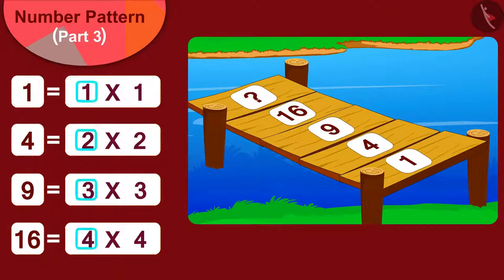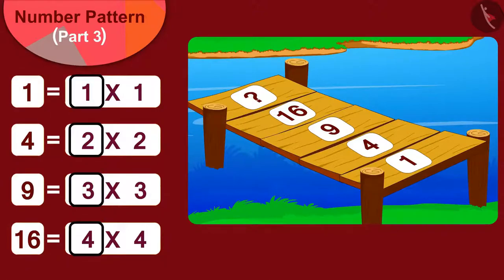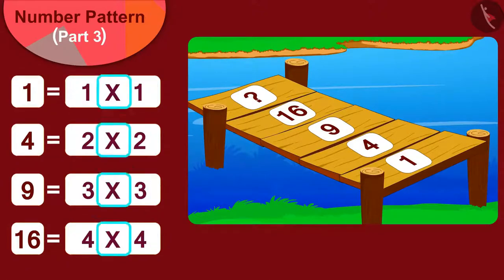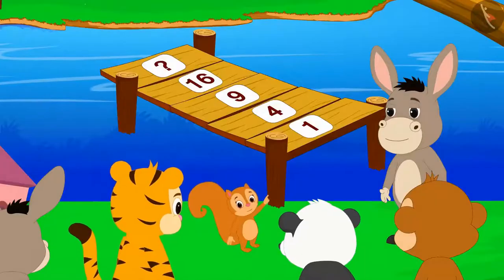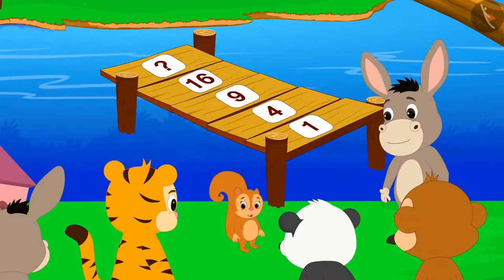This means that the number written on the plank can be found by multiplying the number of the plank by itself. Chanda excitedly told the villagers.